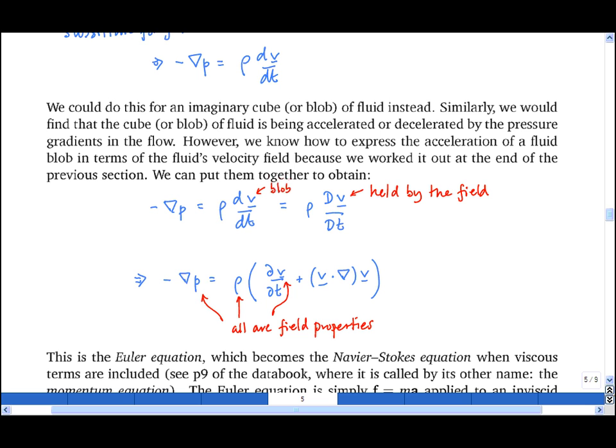This is the Euler equation. It is f equals ma written for an inviscid fluid. If we add on the viscous terms, we get the Navier-Stokes equation, which again is just f equals ma written for a viscous fluid. And this equation is valid at every point in space.